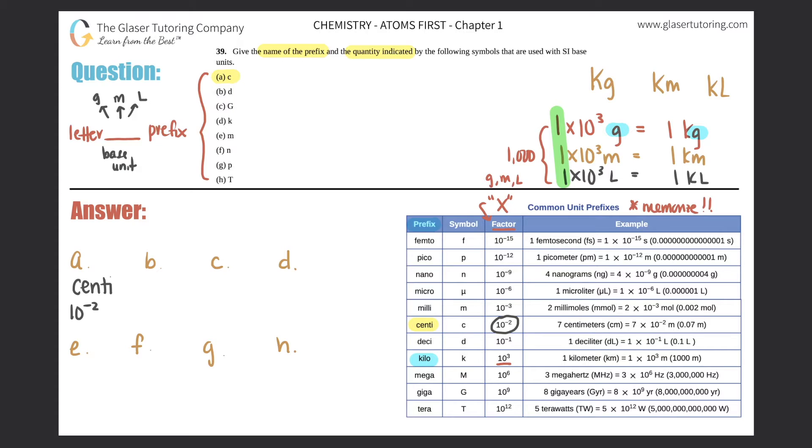I went over how to determine how many zeros are in these types of numbers in the last question. If it's 10 to the positive number, that number is the same number of zeros. If it's 10 to the negative, it's that number minus one zeros after the decimal. This is 10⁻², so 2 minus 1, so there should be one zero after the decimal: 0.01.